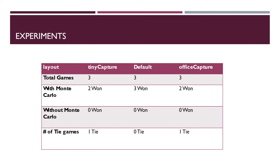Now let's look at the experiment we ran to see how good our agent is. The agent is playing against an agent which does not use Monte Carlo and just picks a random action from the refined action pool. As you can see, in all layouts the Monte Carlo agent wins.